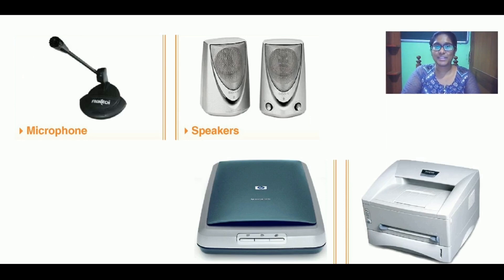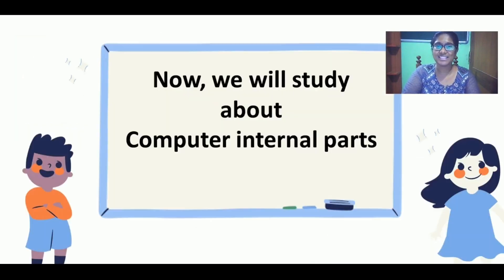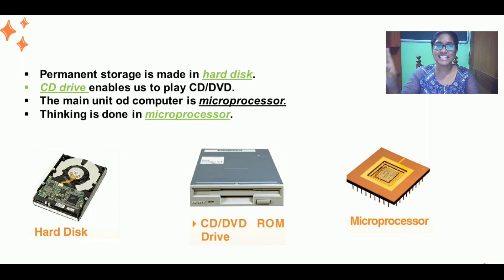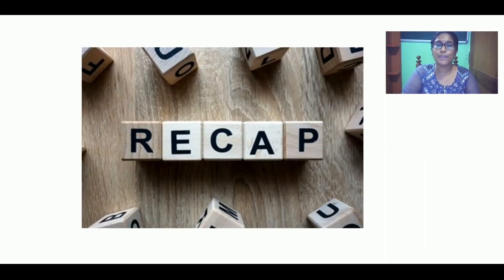These are the pictures that represent the external parts. Let us study about the internal parts. Internal parts are mainly the processor that is microprocessor, hard disk, and the CD drive. Permanent storage of any information is in the hard disk. CD drive enables us to put a CD and play it. The main unit is the microprocessor where the thinking is done — the actual working is done in the microprocessor.